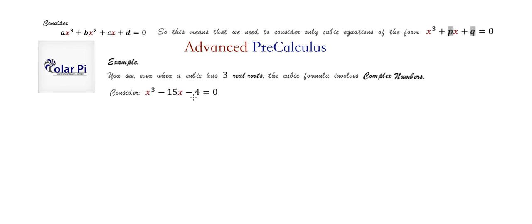This is a familiar cubic — when I taught the rational root theorem, we used this cubic and found all three roots. The three roots are 4, then -2 + √3, and -2 - √3. These come in conjugate pairs from the conjugate root theorem, which I prove in another video. All three roots are real.